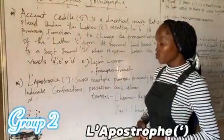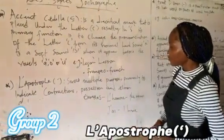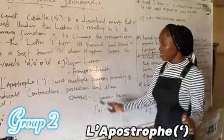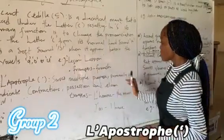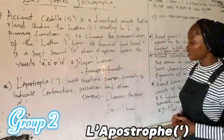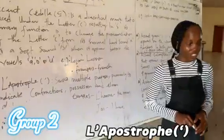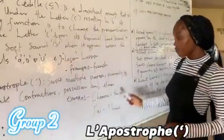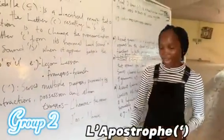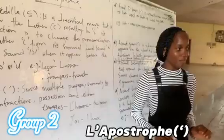We have l'apostrophe. L'apostrophe, just like the English apostrophe, serves multiple purposes — primarily it indicates contractions, possessions, and elisions of words. An example is l'objet, which means 'the object' or 'demand.'